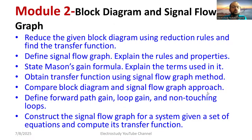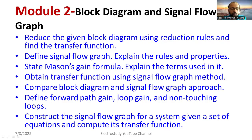Compare block diagrams and signal flow graphs using a table covering complexity, procedure, system representation, and data availability. Define the following terms: forward path gain, loop gain, node, non-touching loop, individual loop. Construct the signal flow graph for a given set of equations and compute the transfer function. These are the important questions from Module 2.